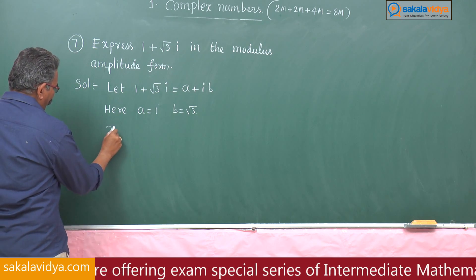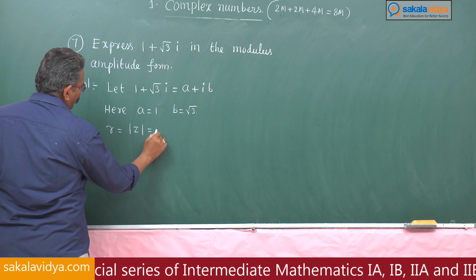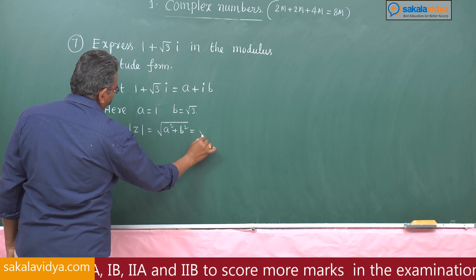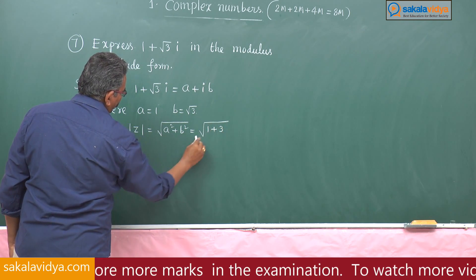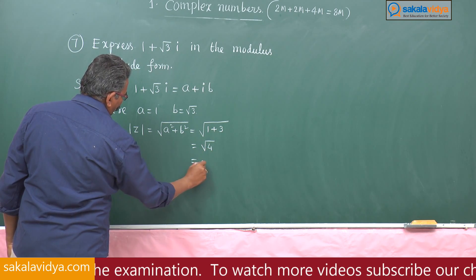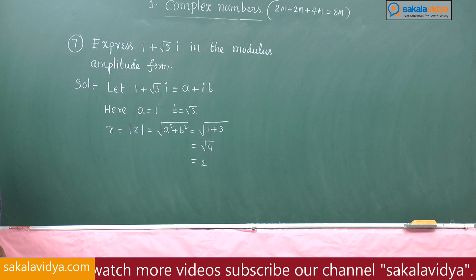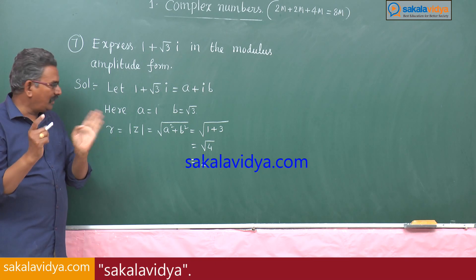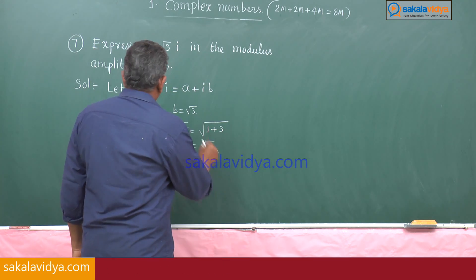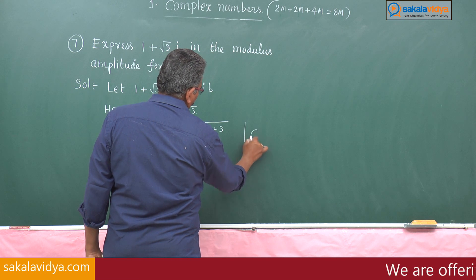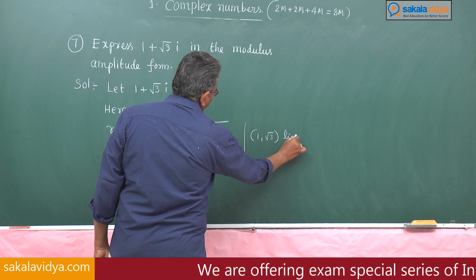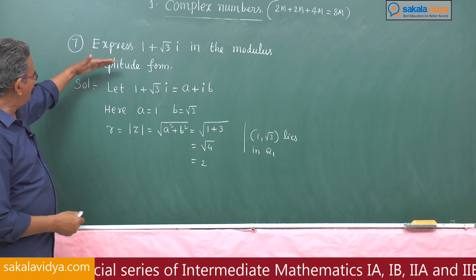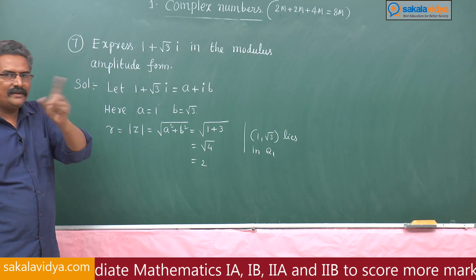Finding r: r equals modulus of z, which is root of a squared plus b squared, that is root of 1 plus (root 3) squared, equals root of 4, which is 2. If we represent 1 plus root 3 i as an ordered pair, it is (1, root 3), which lies in the first quadrant, so the amplitude is between 0 and 90 degrees.